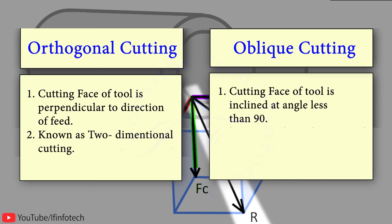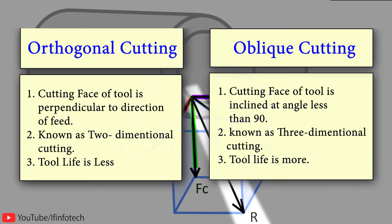In oblique cutting, cutting face of tool is inclined at angle less than 90 degrees and it is known as three-dimensional cutting. The tool life in orthogonal cutting is less, whereas tool life in oblique cutting is more.